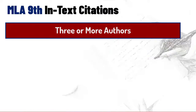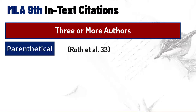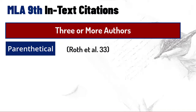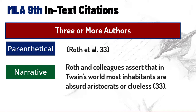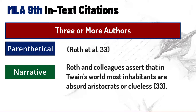When you have three or more authors, only use the first author's name. Here you see it in a parenthetical citation: Roth et al. — and 'et al.' means 'and others.' And there's the narrative citation: Roth and colleagues. You could also say Roth and co-authors, etc.